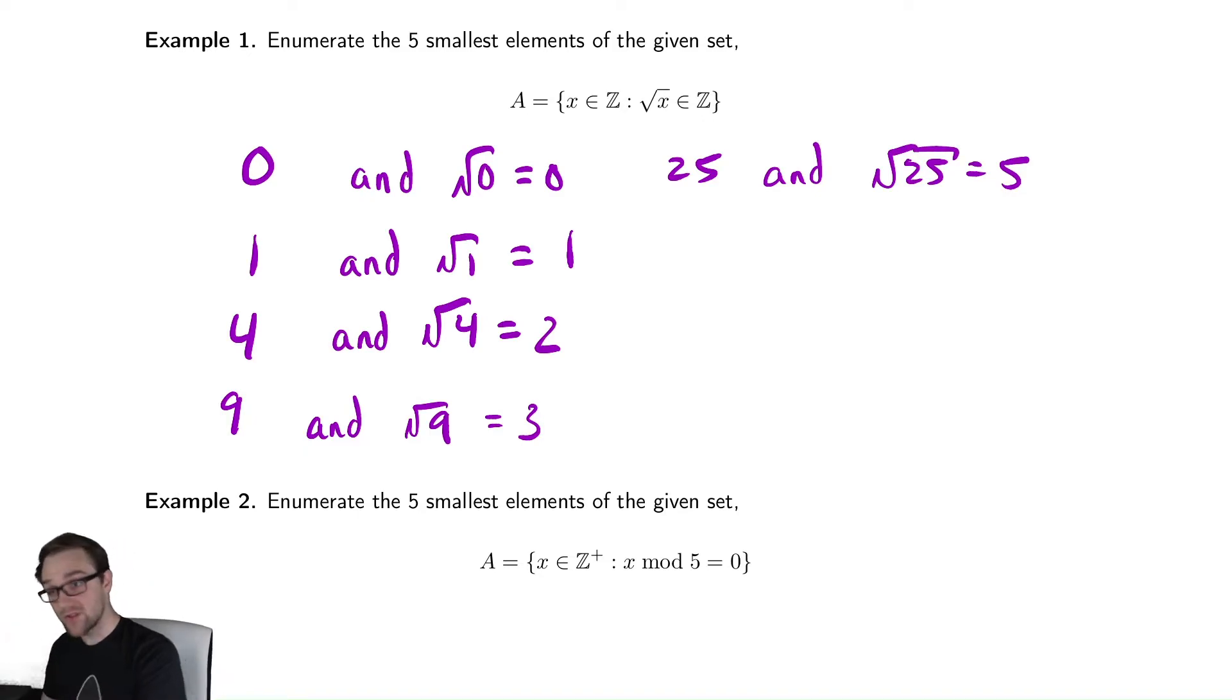So my first five elements are zero, one, four, nine, and twenty-five.